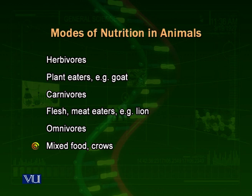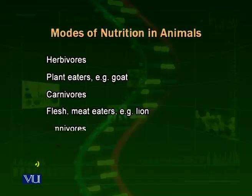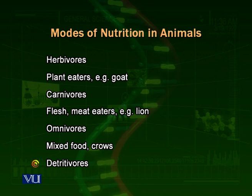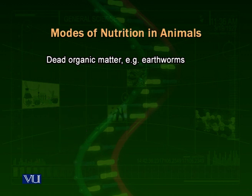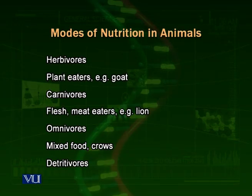We are omnivores. We eat meat and various plants like vegetables. Crows are also omnivores — we observe that crows eat both meat and plant material. Then there is the category called detritivores and decomposers. These are animals or organisms that eat up dead organic matter. For example, the earthworm lives inside the upper layer of the soil and eats up dead organic matter, breaking it down to acquire its energy. So there are four modes of nutrition in animals: herbivores, carnivores, omnivores, and detritivores.